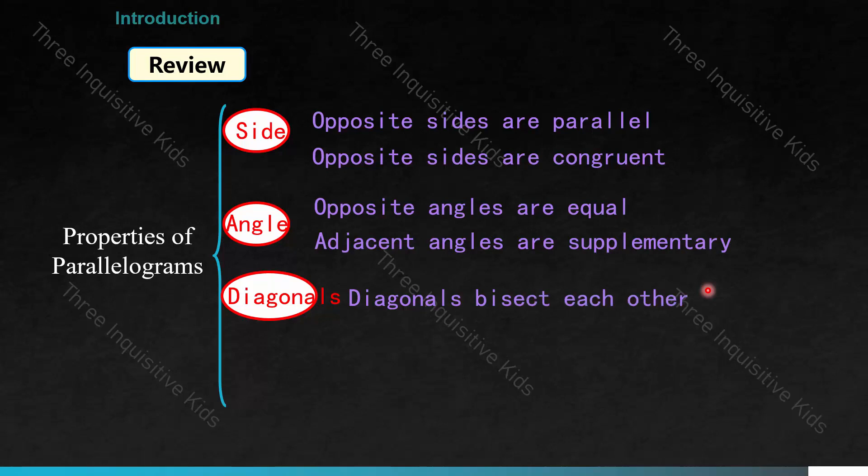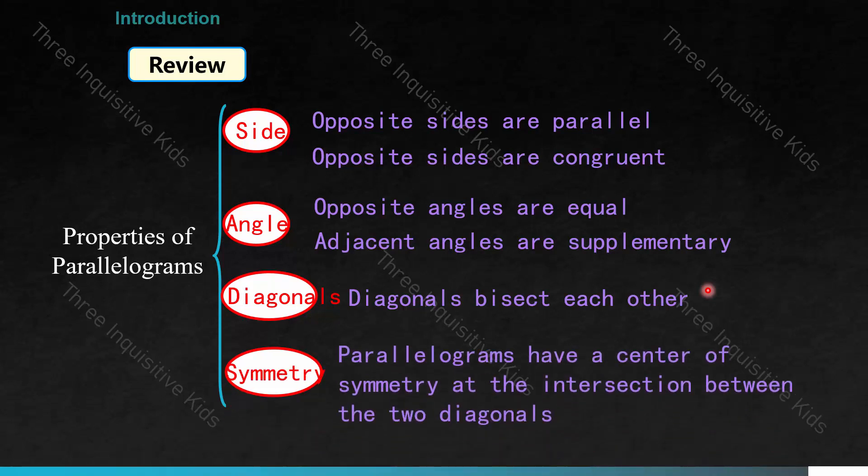For diagonals: diagonals bisect each other. Bisect means that they split each other halfway through exactly. And finally, the property of symmetry: parallelograms have a center of symmetry at the intersection between the two diagonals. This is review from the previous two videos on the properties of each part of a parallelogram.